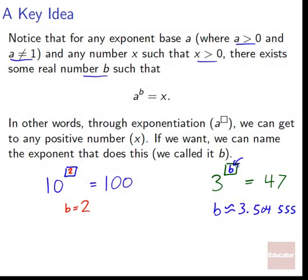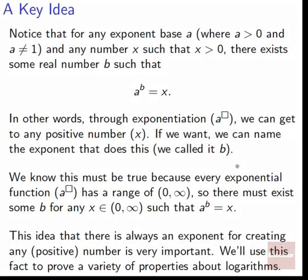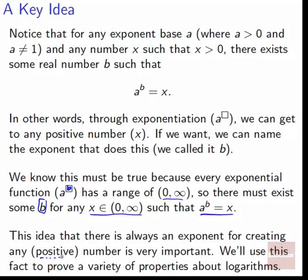We can not know what something is precisely and still talk about it as a general idea. We know this has to be true because every exponential function a to the something has a range of 0 to infinity. Since any positive number can come out of it, there has to be some b that will produce that number. So for any positive x, there has to be some b such that when we plug it in, we get a to the b equals x — guaranteed.